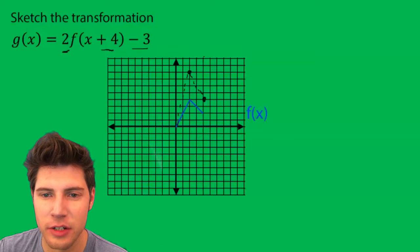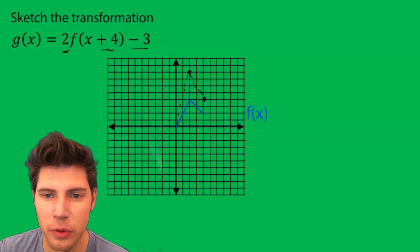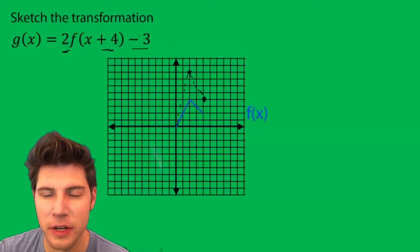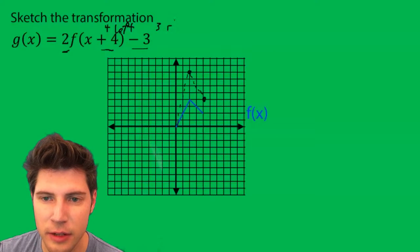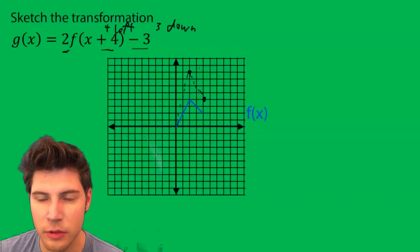Next we have the translation. This plus 4 means 4 to the left, and this minus 3 means 3 down. So this is 4 left, 3 down. So we're literally just going to do that.